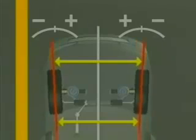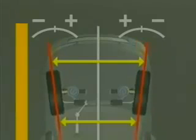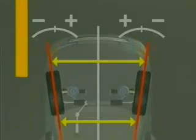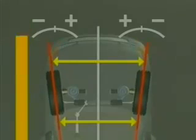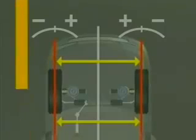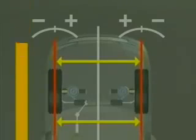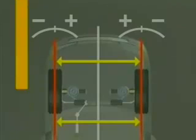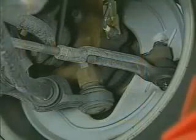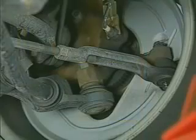Toe is negative, or toe-out, when the rear of the tires are closer together than the front of the tires. Zero toe occurs when the wheels are parallel. Toe is adjusted with the tie rod end adjusters. The steering wheel can also be centered using this adjustment.